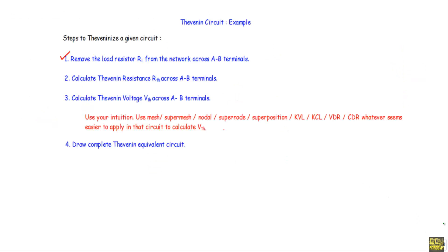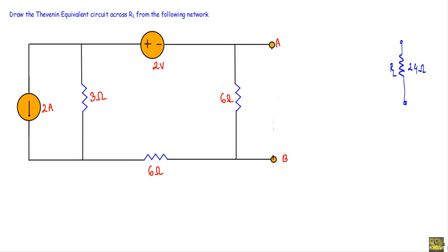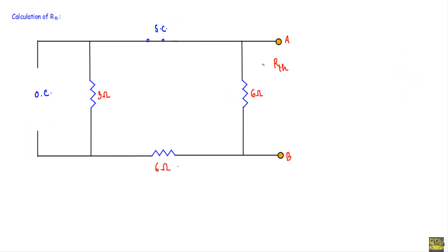After that we will calculate the Thevenin resistance Rth across the A-B terminals. While calculating Rth, if there are any current sources in the circuit we will replace them with open circuits, and we will replace the voltage sources with short circuits. We have this voltage source — we will replace it with a short circuit. This current source we will replace with an open circuit.